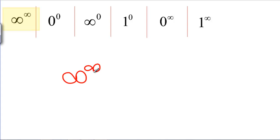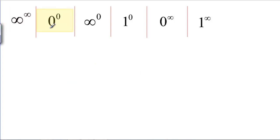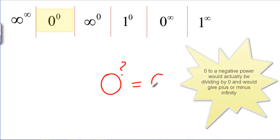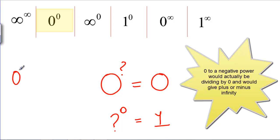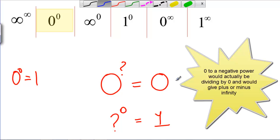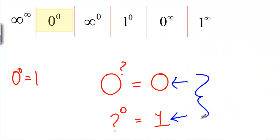Infinity raised to the infinity: take something really big, raise it to a really big positive power, and you get something even bigger — it's still infinity. For 0 to the 0: 0 raised to any power should be 0, but any number raised to the 0th power is supposed to be 1. By definition we even say 0^0 as a number is 1, but for limits, if we're approaching 0 on top and 0 in the exponent, we can't say which is going to win. So 0^0 is indeterminate.